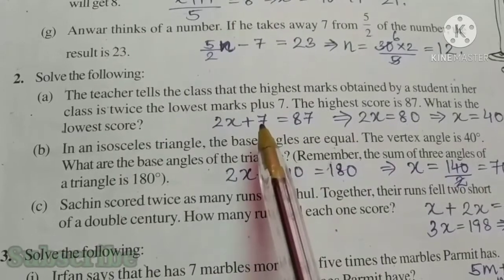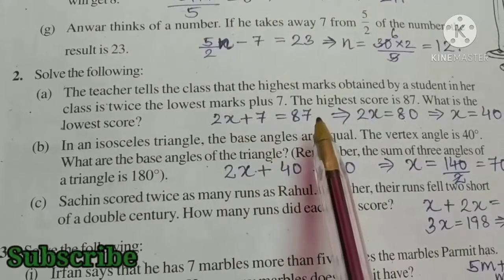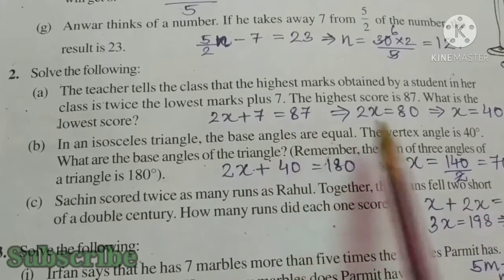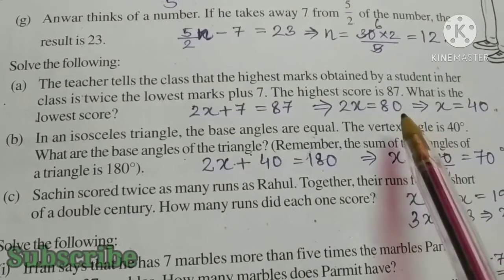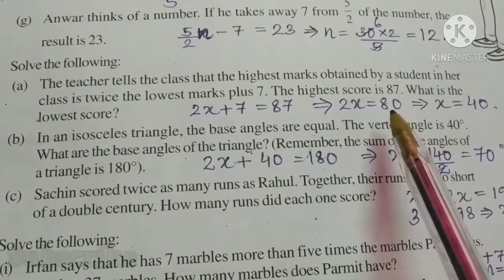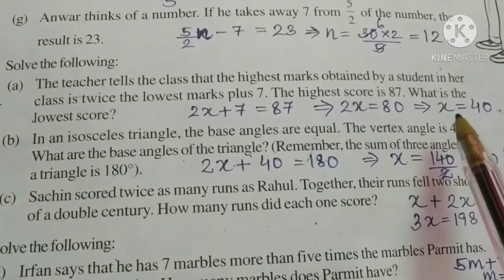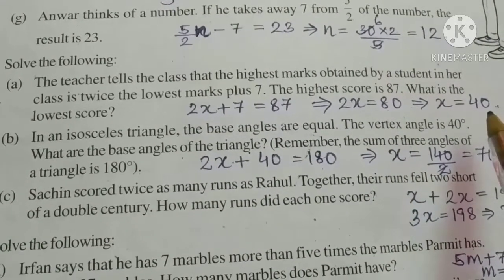Now, first we will transpose 7 to RHS. So, we will get 2x equal to 80. Now, we will divide both sides by 2. We will get x is equal to 40. That is the lowest score.